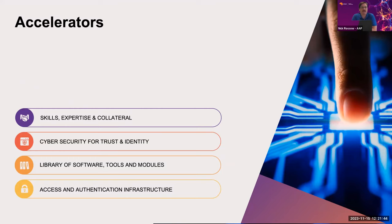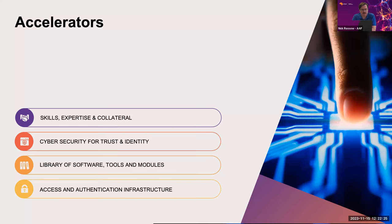The accelerator components are about making a sustainable trust and identity framework. We can do that by increasing the skills and expertise of the communities themselves — training is a big part of what we're doing. Cyber security underpins basically everything. We need to make sure the trust and identity component is managed in the most cyber-secure fashion possible. We're developing a library of software and tools — things we've found successful through incubator projects will be made available to the wider community, including penetration-tested software.